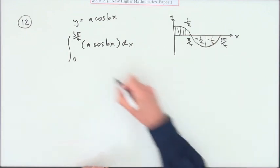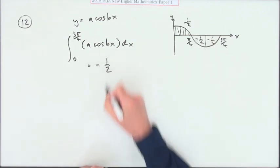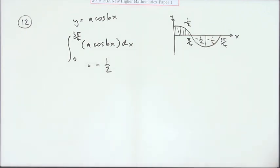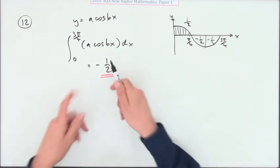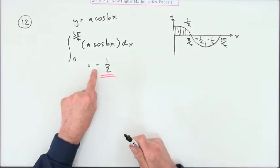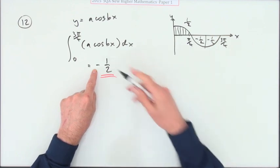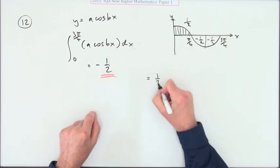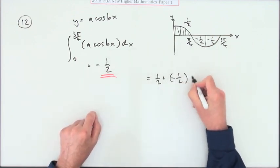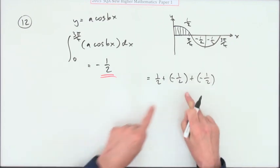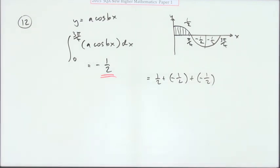Which means the overall answer to that will be negative a half. Now there's two marks for this, so maybe I can't really put that down. Maybe I'd have to show that it equals a half plus negative a half plus negative a half, and then c equals negative a half.